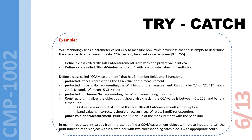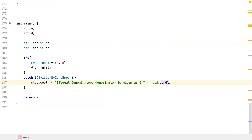I'll define two error classes: IllegalCCAMeasurementError with a public int CCA member, and IllegalWirelessBandError with a public int bandNumber member. Then I'll define a class CCAMeasurement with protected member fields: int CCA, int bandNumber, and int channelNumber. The constructor should check if the CCA value is between 0 and 255 — if not, throw IllegalCCAMeasurementError. If the band value is not 1 or 2, throw IllegalWirelessBandError. Finally, a public void printMeasurement function prints the CCA value with band information.